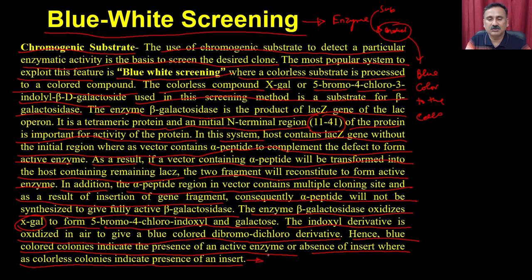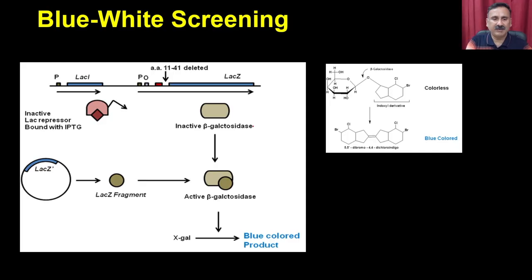This is actually the reversal of what we discussed. If the enzyme is active, it converts X-gal into the blue-colored compound. But since we clone the gene of interest into the alpha region, once the gene is inserted it will not complement the remaining portion present in the host, and as a result it will not show activity. So the cells that show no activity and remain colorless are actually the transformed cells.